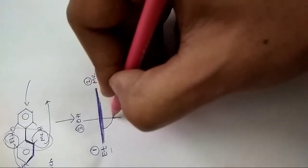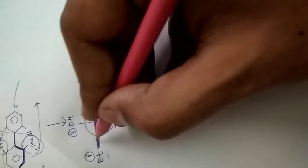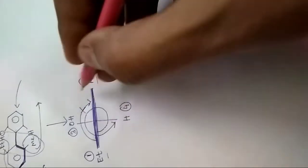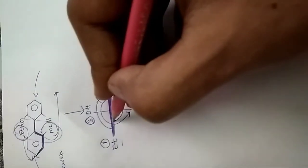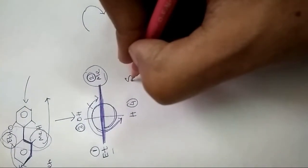So we have: first priority Et, second Me, third OH, fourth H. We rotate from first to second to reach the lowest priority group. We go anticlockwise — we cannot go the other direction because that would cross the third priority group before reaching the second, which is not acceptable. Since the rotation is anticlockwise, the configuration is S.